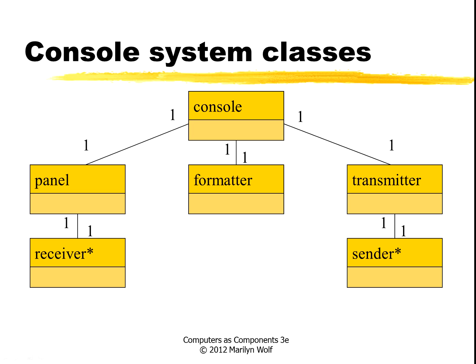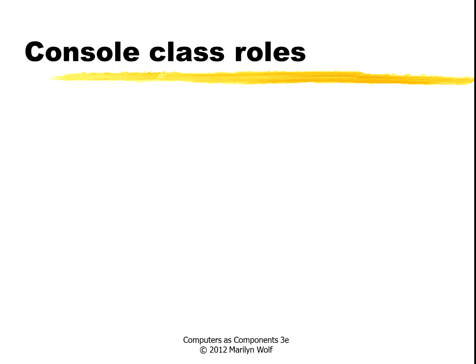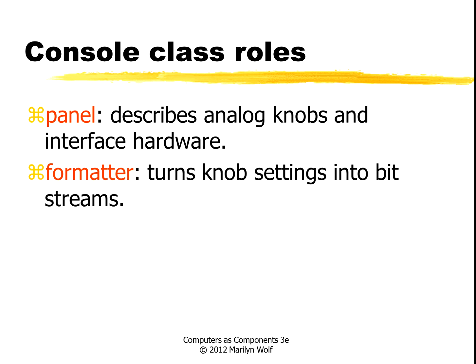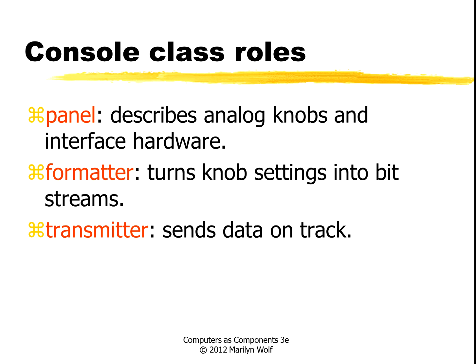Here is a set of classes for the console. We have a basic console with one front panel and one transmitter — that's the circuitry that goes to the tracks. And we have a formatter that takes information from the panel and builds a packet. These are all software. The panel communicates with a class that defines the front-end devices. The transmitter communicates with a class that defines the interface to the rails. The front panel describes the analog knobs and the interface hardware. The formatter turns the knob settings into bitstreams. The transmitter sends data onto the track.